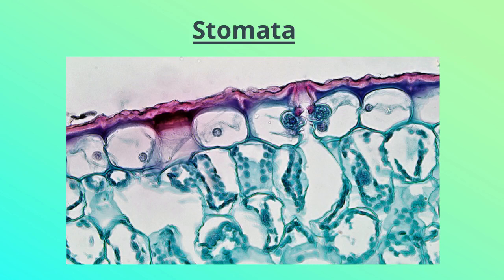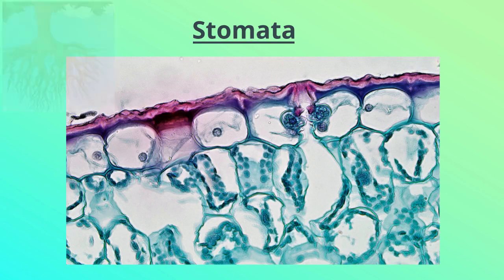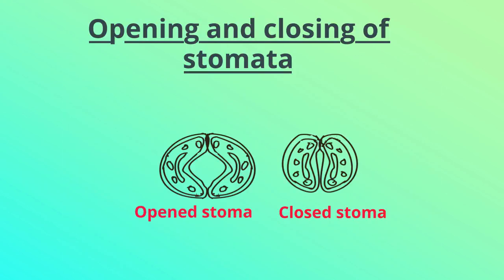It is important to note that exchange of gases can also occur through the surface of stems and roots. Loss of water also occurs through stomata. To prevent this, stomata close when carbon dioxide is not required for photosynthesis. This opening and closing of stomata is controlled by a pair of guard cells surrounding the stoma. The guard cells swell when water flows into them, causing the stomatal pore to open. Similarly, the pore closes when the guard cells lose water. Hence, we can conclude that stomata help in the movement of gases in and out of the plant cells.